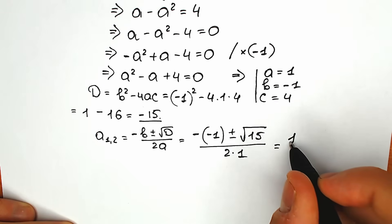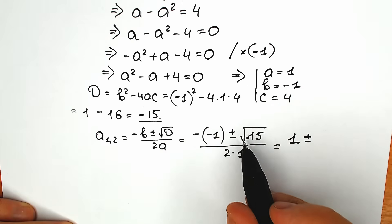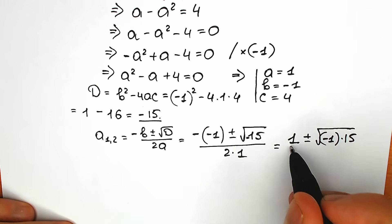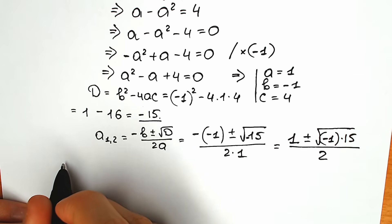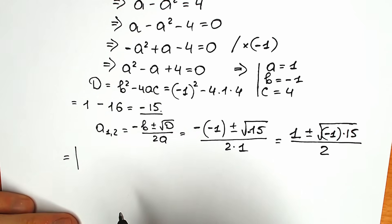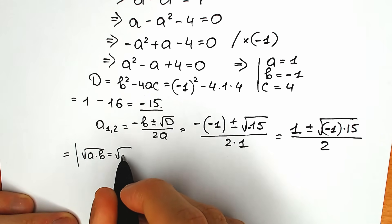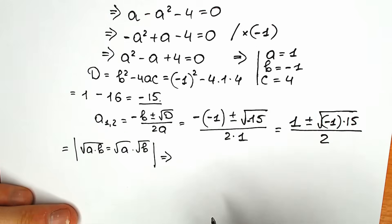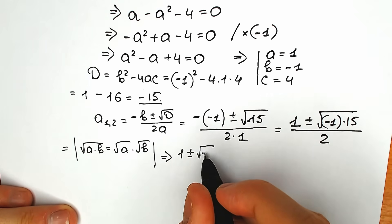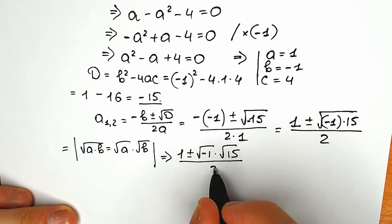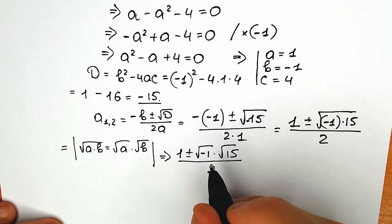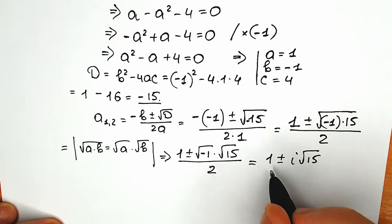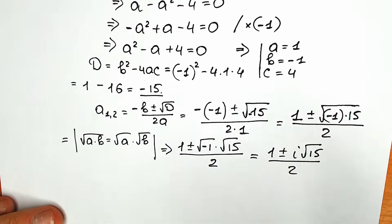Minus minus is plus, so we have 1 plus or minus the square root of minus 15, divided by 2. We can write square root of minus 15 as square root of minus 1 times square root of 15. Using the property that √(a·b) = √a · √b, and since √(minus 1) equals i, we get: 1 plus or minus i times square root of 15, all divided by 2.